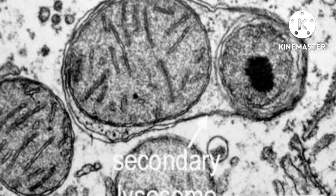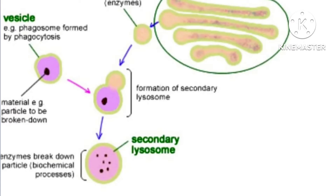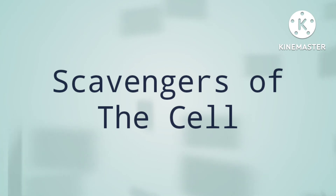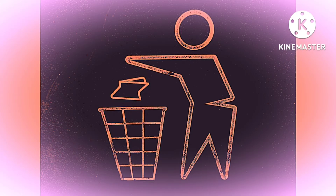At that time it is also known as the secondary lysosome, which is the active lysosome. In other words, when primary lysosomes become active, they are known as secondary lysosomes. These are also known as the scavengers of the cells because they digest waste material and throw out the leftover. When the lysosome remains with the leftover material, it is known as the tertiary lysosome.